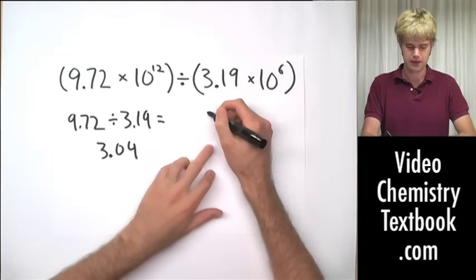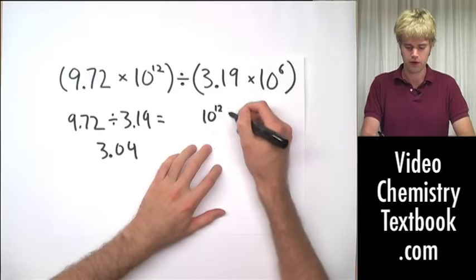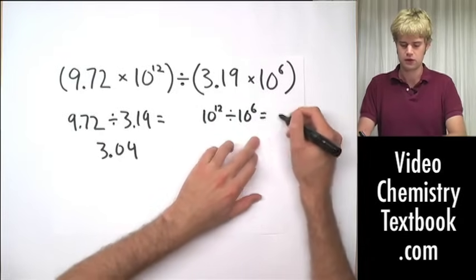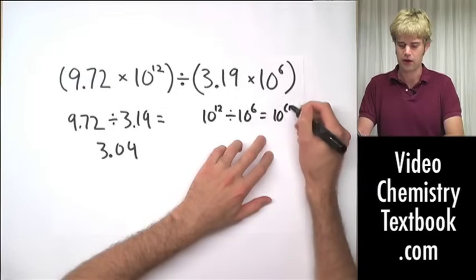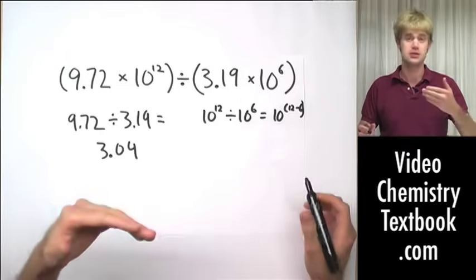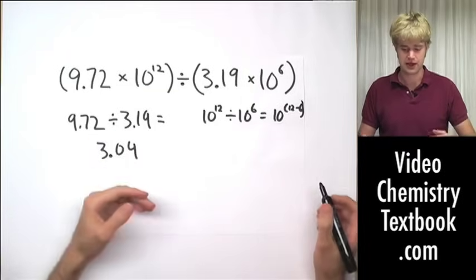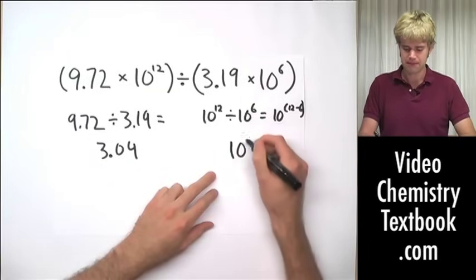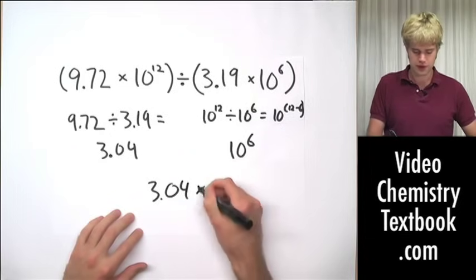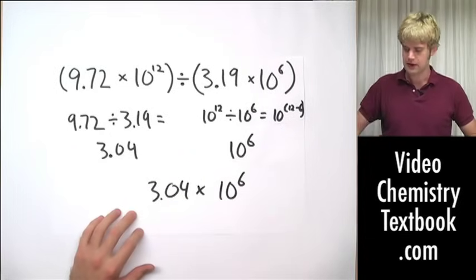That's the first part. The second part, 10 to the 12th divided by 10 to the sixth equals 10 to the 12 minus 6, because it's division we subtract the exponents. So I'm going to get 10 to the sixth. So our final answer here is 3.04 times 10 to the sixth.